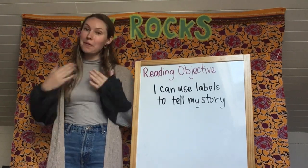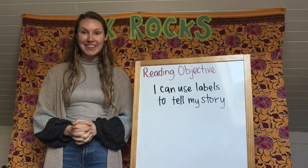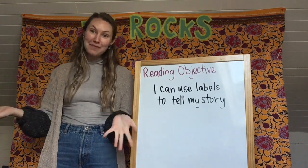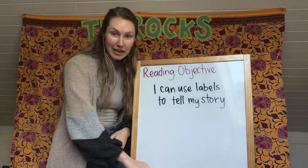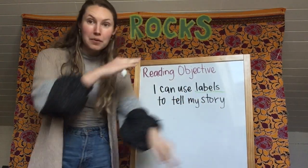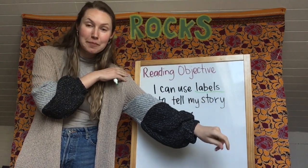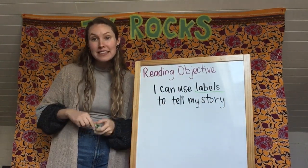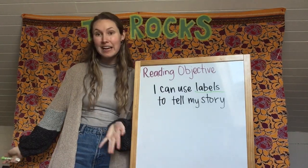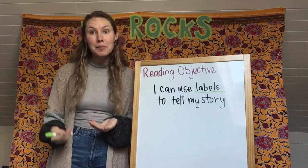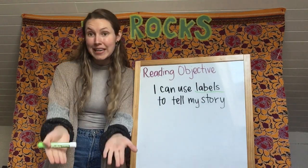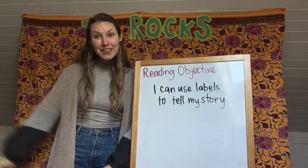The objective is what we are going to learn. I can use labels to tell my story. Yesterday we talked about what labels are, and we talked about how we're using beginning sounds to help us. We're going to be using these labels to help us tell our stories in our journals — to tell the person who's listening or looking at your picture what's in your picture.